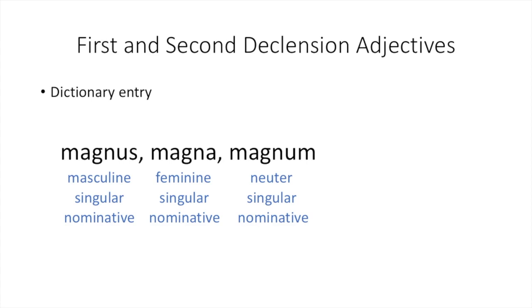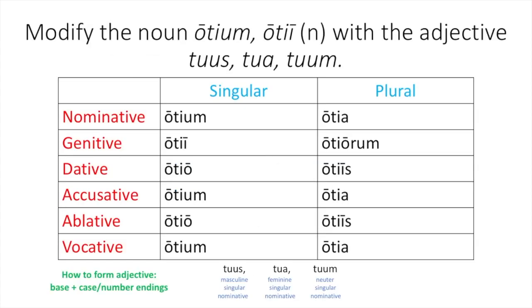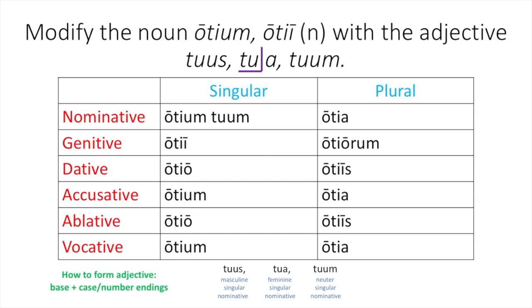Let's add an adjective to a second declension neuter noun. We'll use the adjective totus, tota, totum to modify our noun otum, ote, that we've already declined. You get your free form from your dictionary entry — that totum is your neuter singular nominative, so you can just drop that into your chart. To decline the adjective, you take your base and add your case and number endings. To get your base, you take your feminine singular nominative form and remove the feminine singular nominative ending, that A, giving you the base tot.